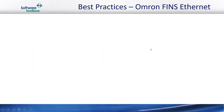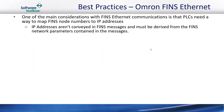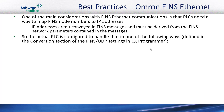I'd like to cover some best practices when it comes to the Omron FINS Ethernet protocol. One of the main configurations with FINS Ethernet communications is that the PLCs need a way to map FINS node numbers to IP addresses. The reason for that is because IP addresses aren't actually contained in FINS messages and must be derived from FINS network parameters that are included in FINS protocol messages. The ECHO PLC itself is configured to handle that conversion, as defined in the conversion section of the FINS UDP settings in the Omron CX Programmer programming software.